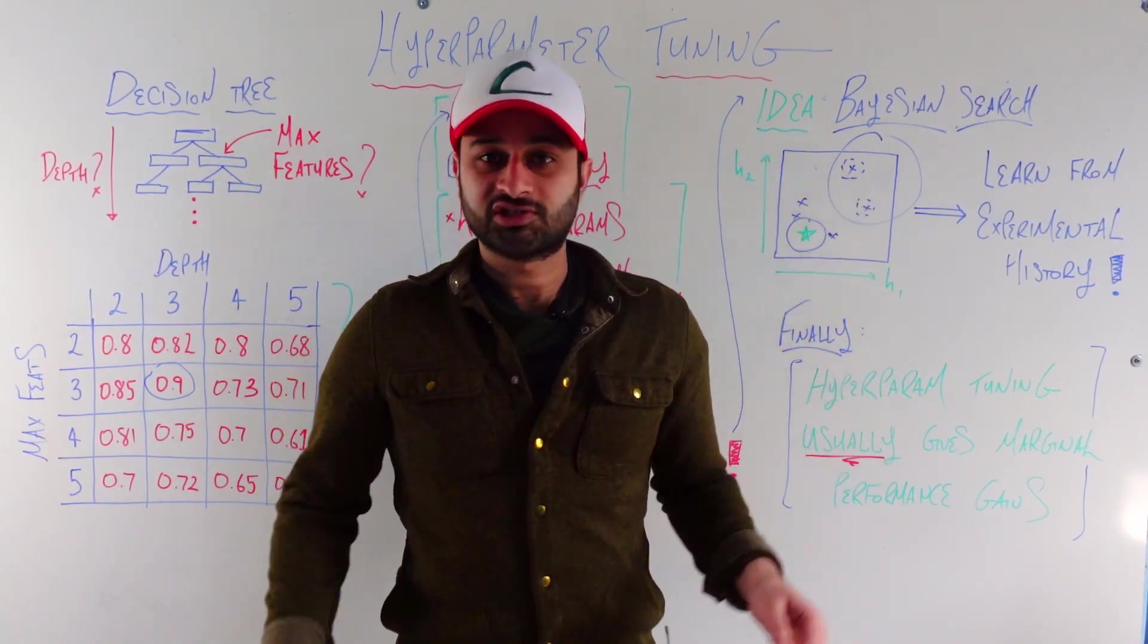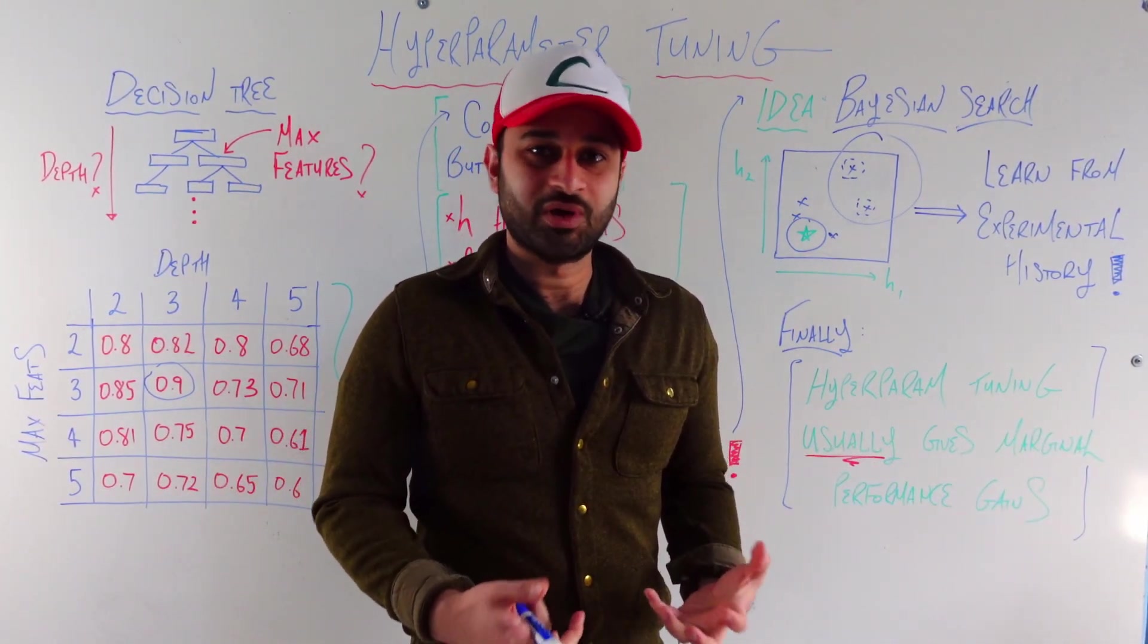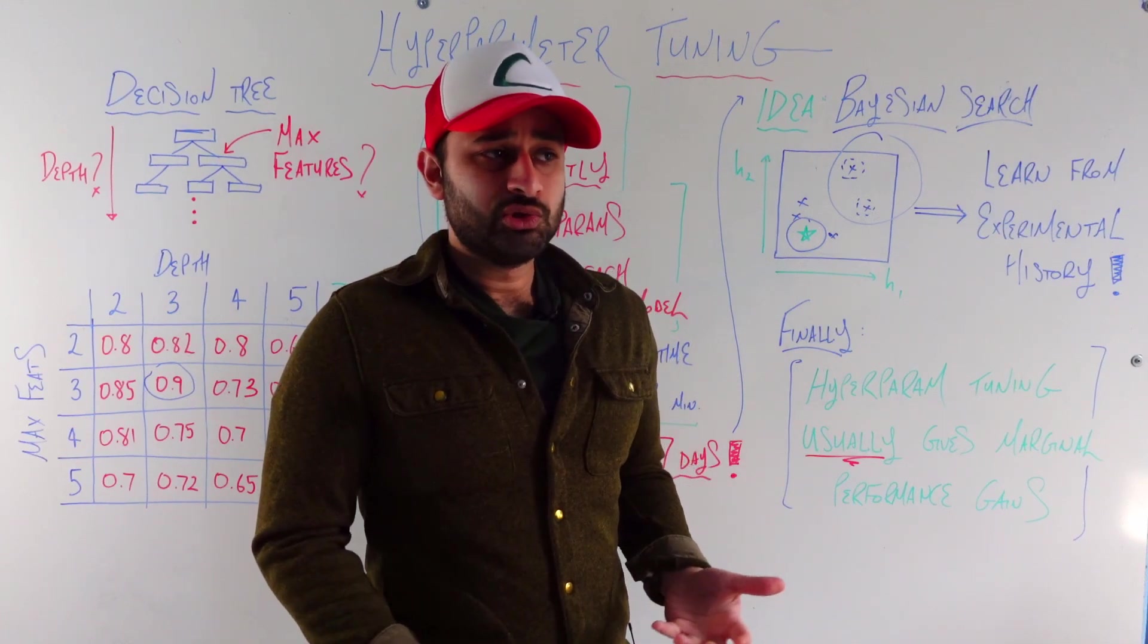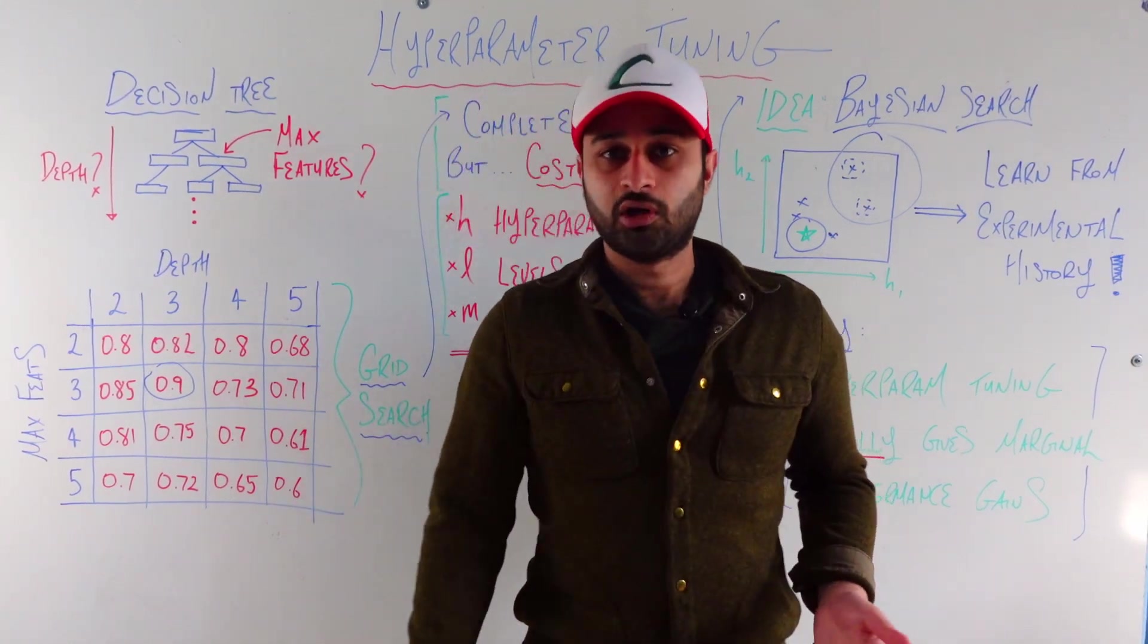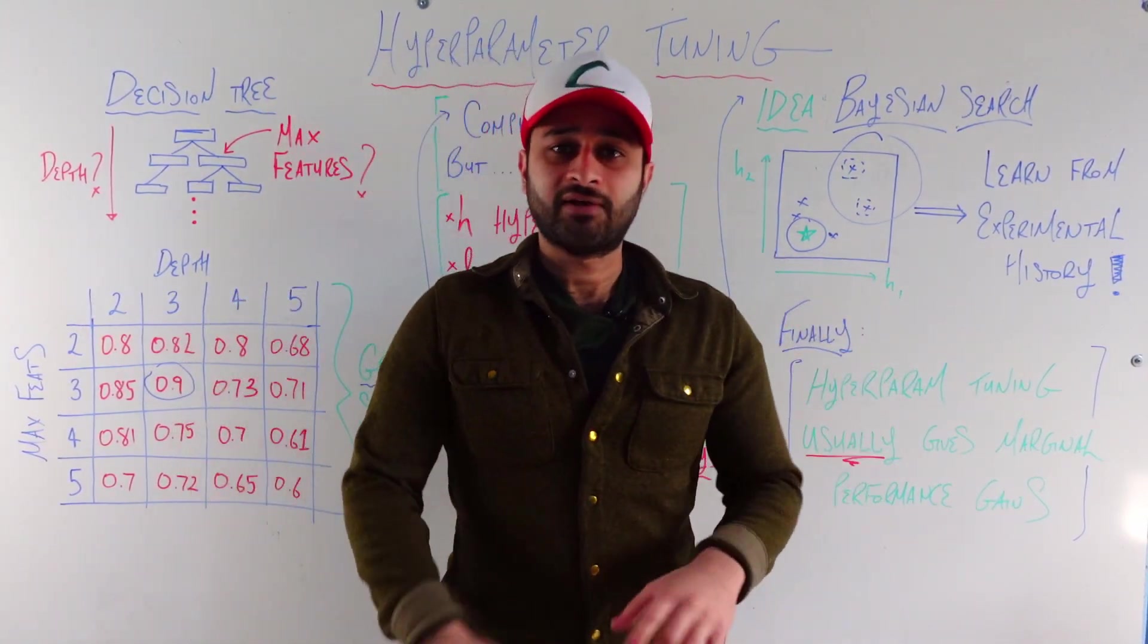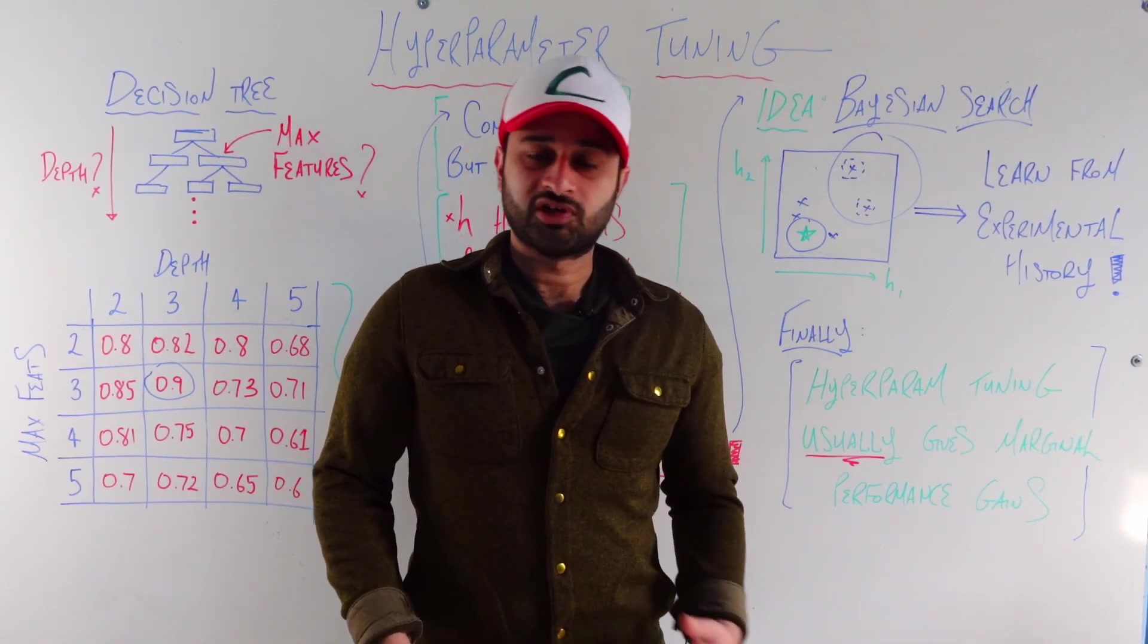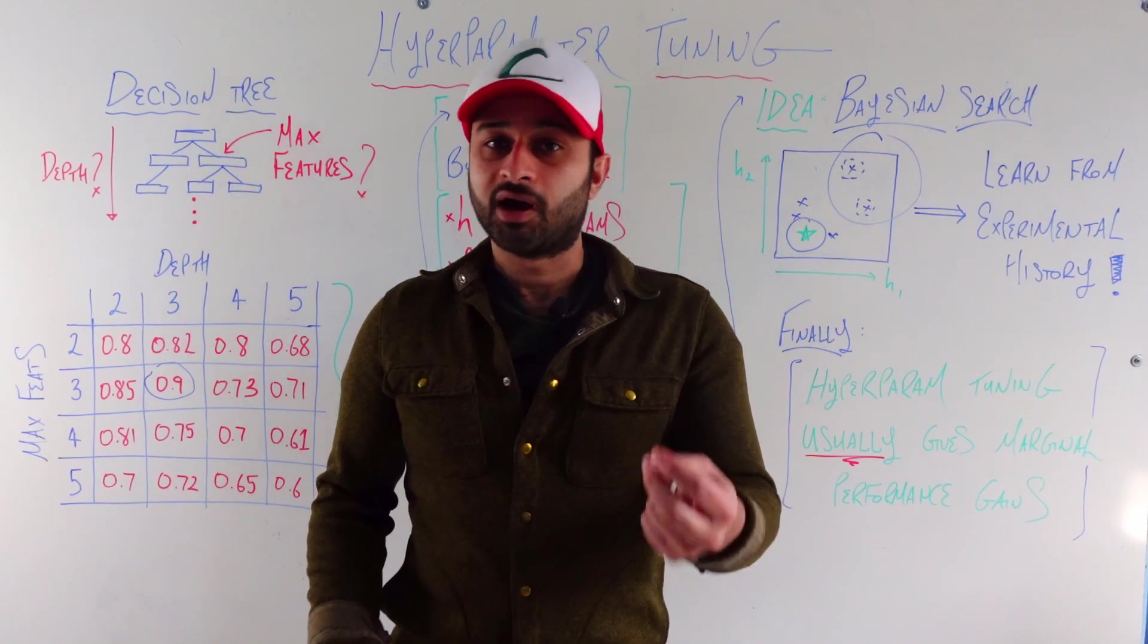So that's the beauty of Bayesian stats. I'm just blown away by it every time, even though I've looked at this many, many times, but super cool. And you can see intuitively why this is better than a grid search. A grid search is just going through every possible combination, not learning anything from the past. A Bayesian search is saying that I have some kind of prior belief, let's do some experiments, let's learn from those experiments and find the best combination of hyperparameters.